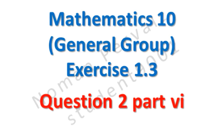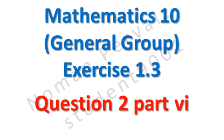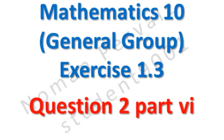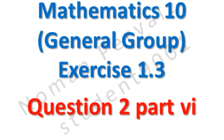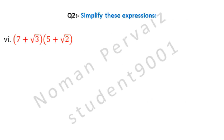Next, we are going to solve part 6 of question number 2 of 10th class math, general group, exercise 1.3. Question 2 is: simplify these expressions. And part 6 is (7 + under root 3) into (5 + under root 2).